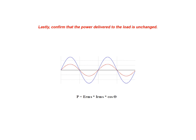Lastly, we confirm that the true power delivered to the load is unchanged by this modification. As illustrated by the results of this calculation, the true power being dissipated by the modified circuit is equal to 6.54 watts, which is the equivalent power to that of the initial unmodified circuit.